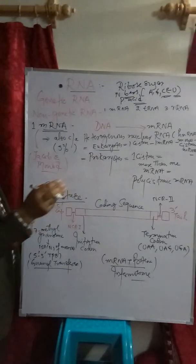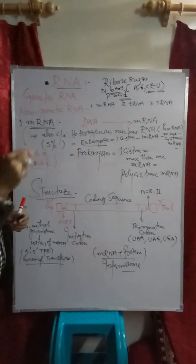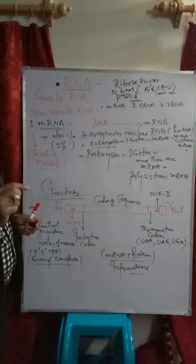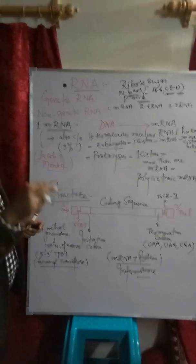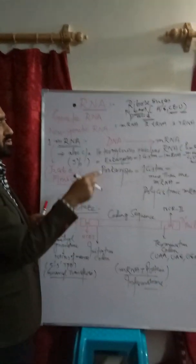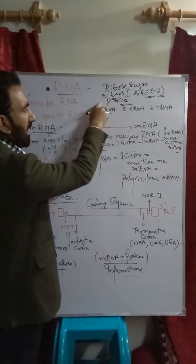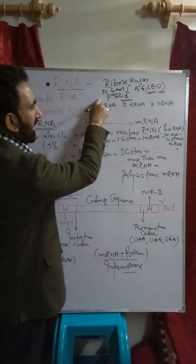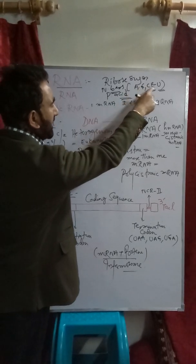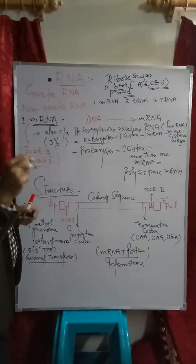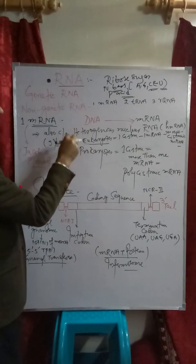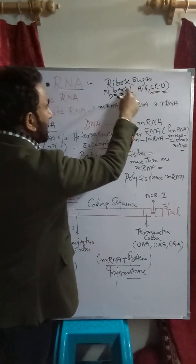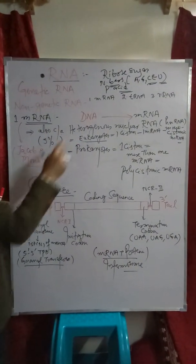To summarize, RNA is a polynucleotide chain composed of large numbers of nucleotides. Each nucleotide contains ribose, a 5-carbon sugar, nitrogenous bases — adenine, guanine, cytosine, and uracil — and phosphoric acid. Thymine is absent in RNA; uracil is present in its place.